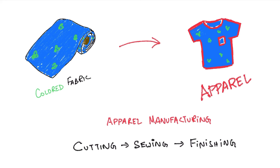Then these garments are sent to the finishing section. In this section the garments are ironed, then folded, tagged and packed.